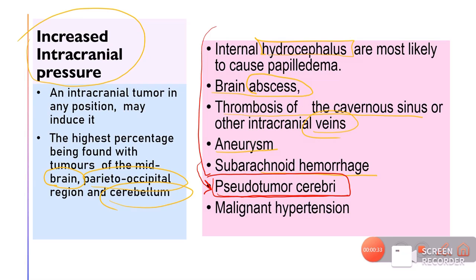Malignant hypertension can also cause raised ICP. In malignant hypertension, raised blood pressure is associated with raised ICP, however this theory is not well supported.